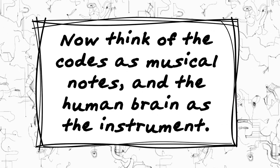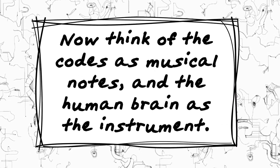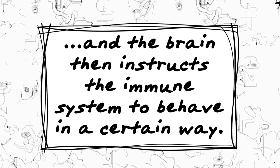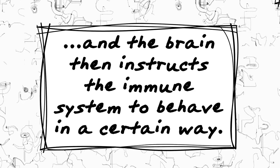Now think of the codes as the music notes and the human brain as the instrument. The codes are translated by the brain and the brain then instructs the immune system to behave in a certain way.